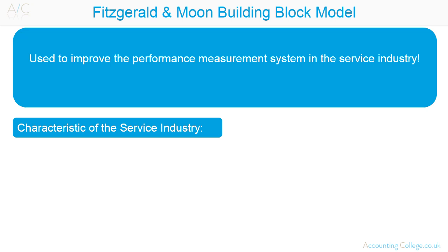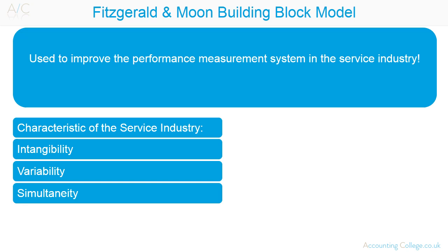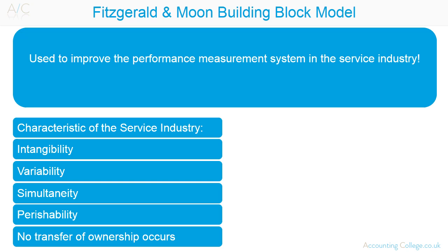The service industry has five key characteristics that differentiate it from the manufacturing industry: intangibility, variability, simultaneity, perishability, and no transfer of ownership. Let's look at those in turn and apply them to a college course scenario.